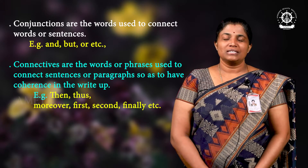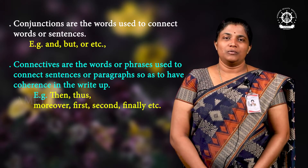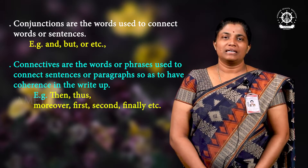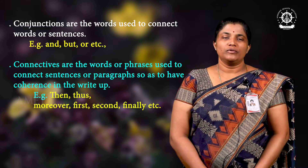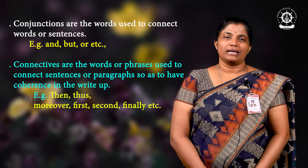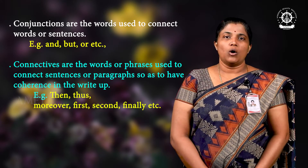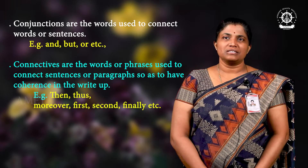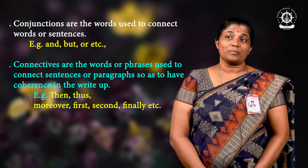Good morning learners, welcome to the course Grammar and Usage for Undergraduates. We are going to learn about conjunctions and connectives. Conjunctions are words used to connect words or sentences — for example: and, but, or, so. We use these conjunctions to connect either words or sentences.